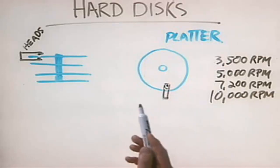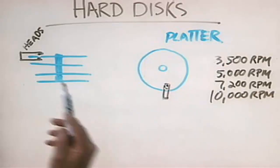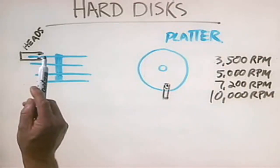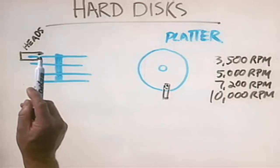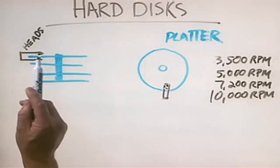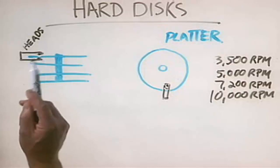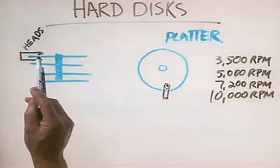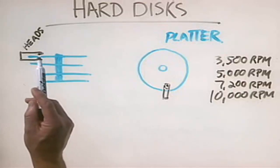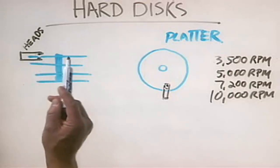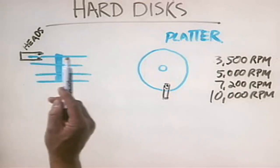As the disk spins, it actually creates a little cushion of air on the top and bottom of the platter. This is called the Bernoulli effect. The heads, instead of actually touching the platter, float on top of this cushion of air.